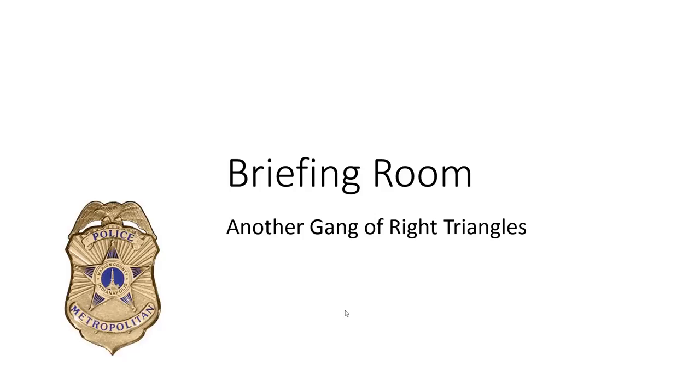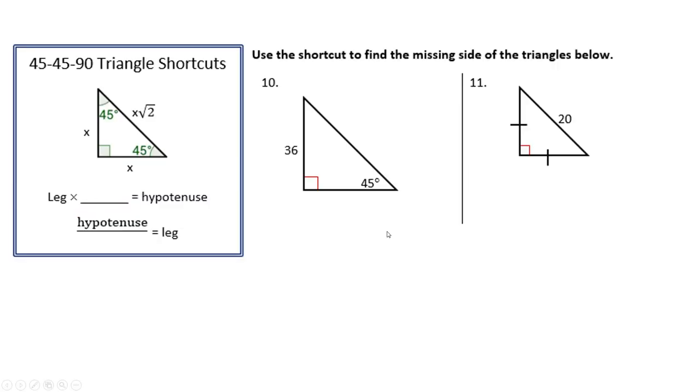That was great detective work with the isosceles right triangle gang. You've found some great shortcuts when working with these triangles. Take a leg and multiply it by the square root of 2 to get the hypotenuse. If you have a hypotenuse, divide it by the square root of 2 to get a leg.